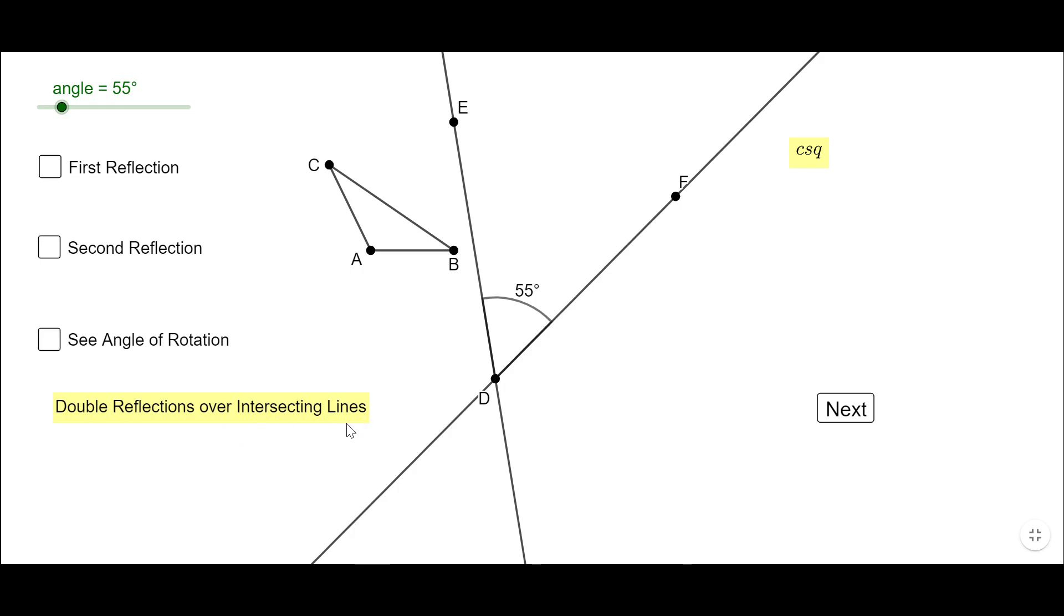You can notice here we have two intersecting lines, the line DE and the line DF. The angle between these two lines is 55 degrees. Later I'm going to change it to see what happens. But first, let's take a look.